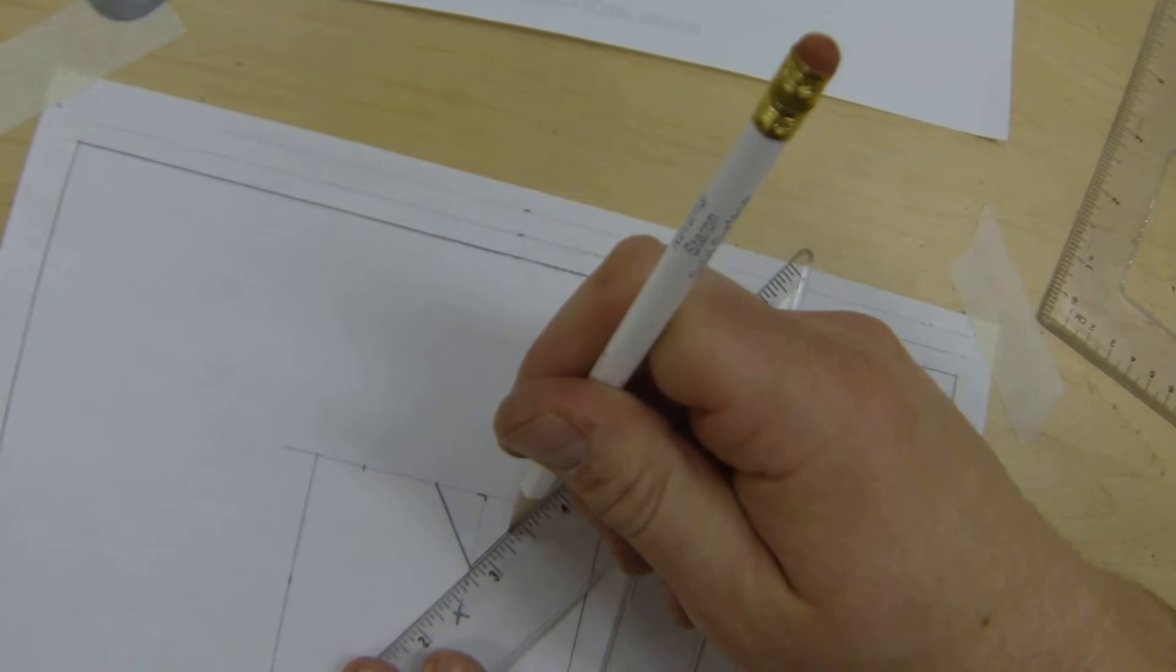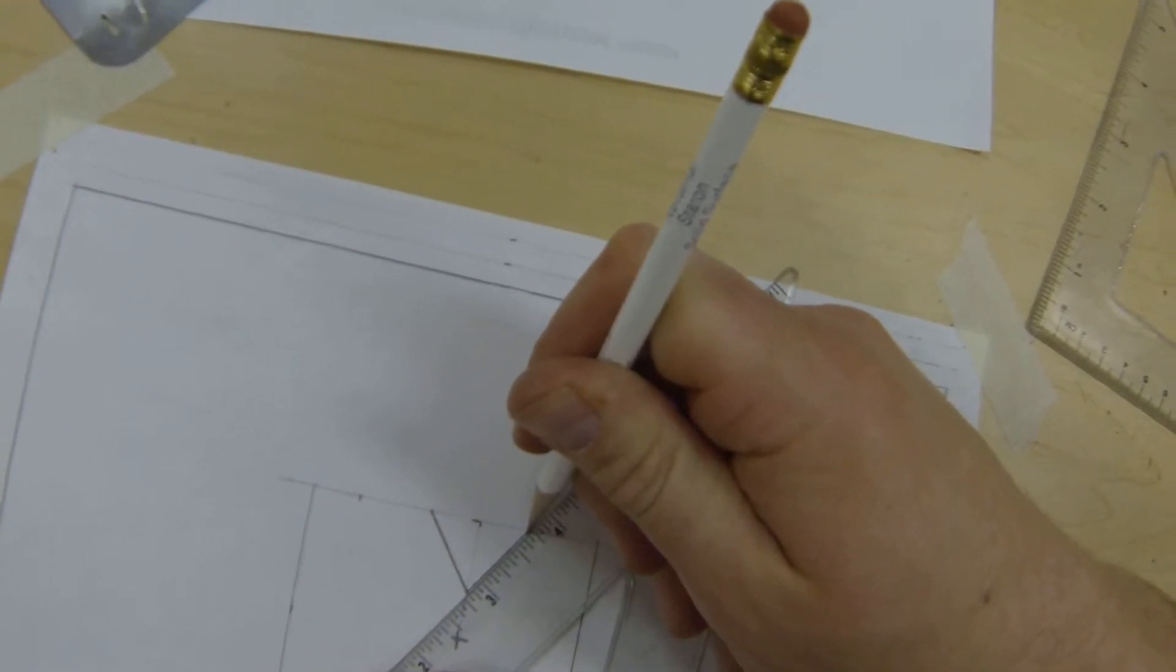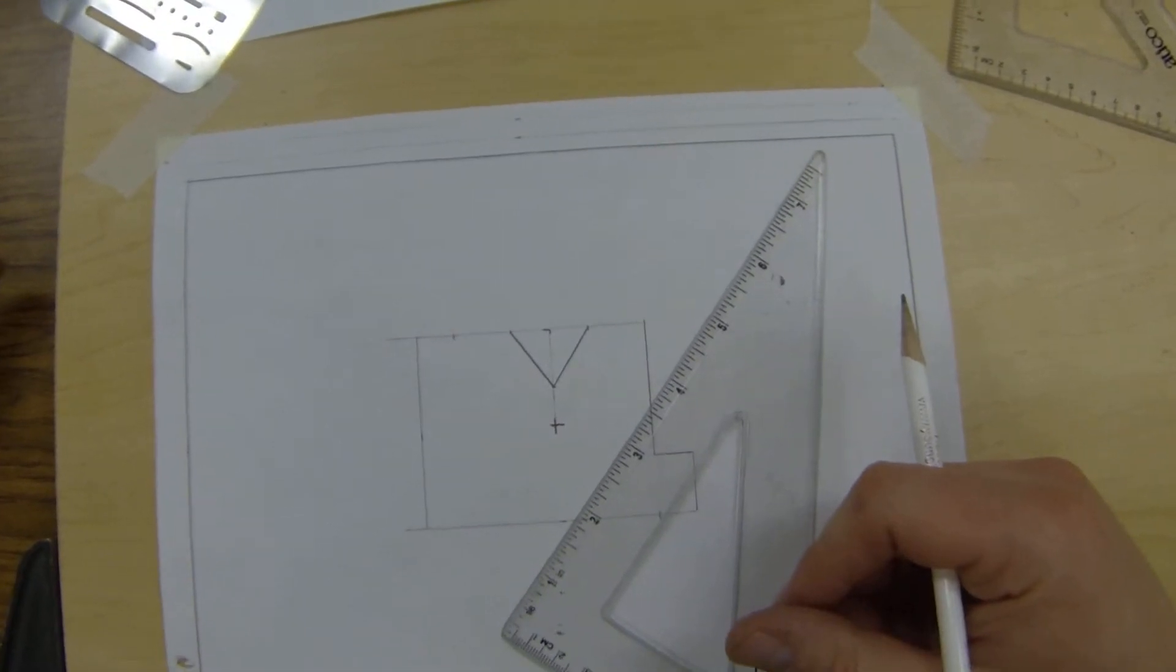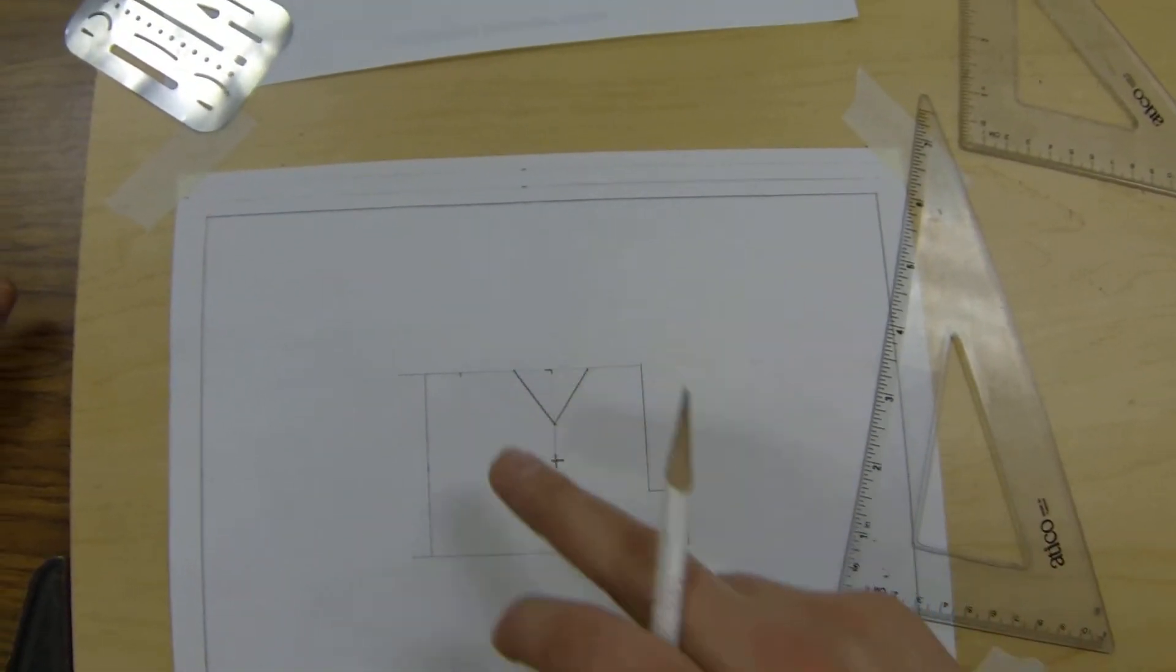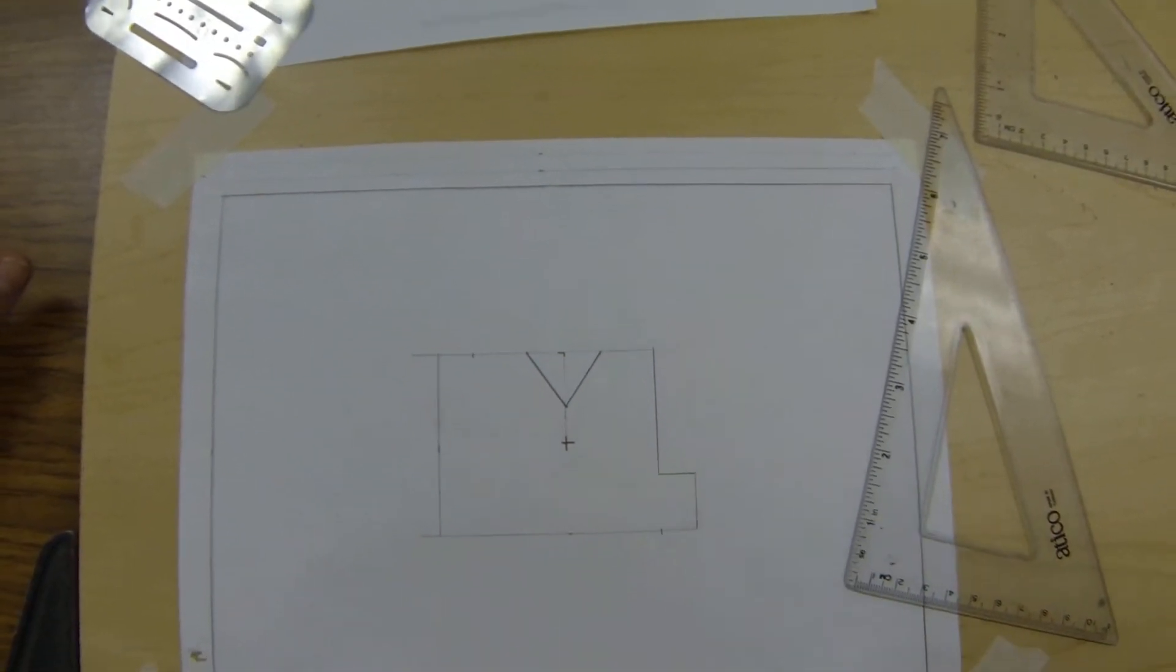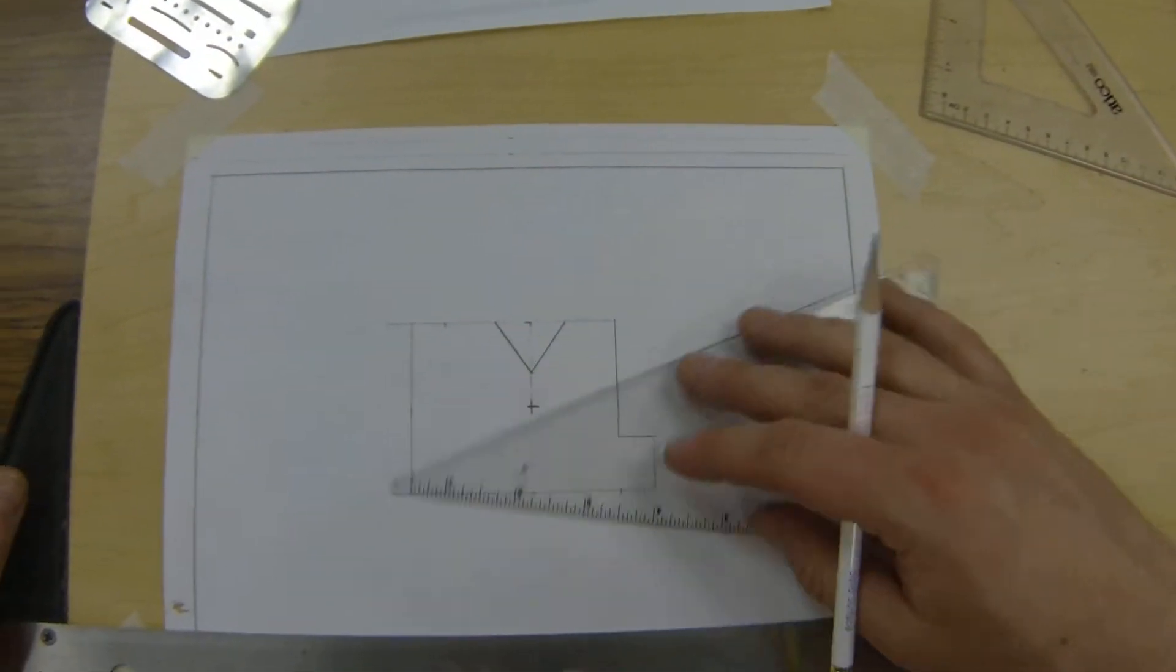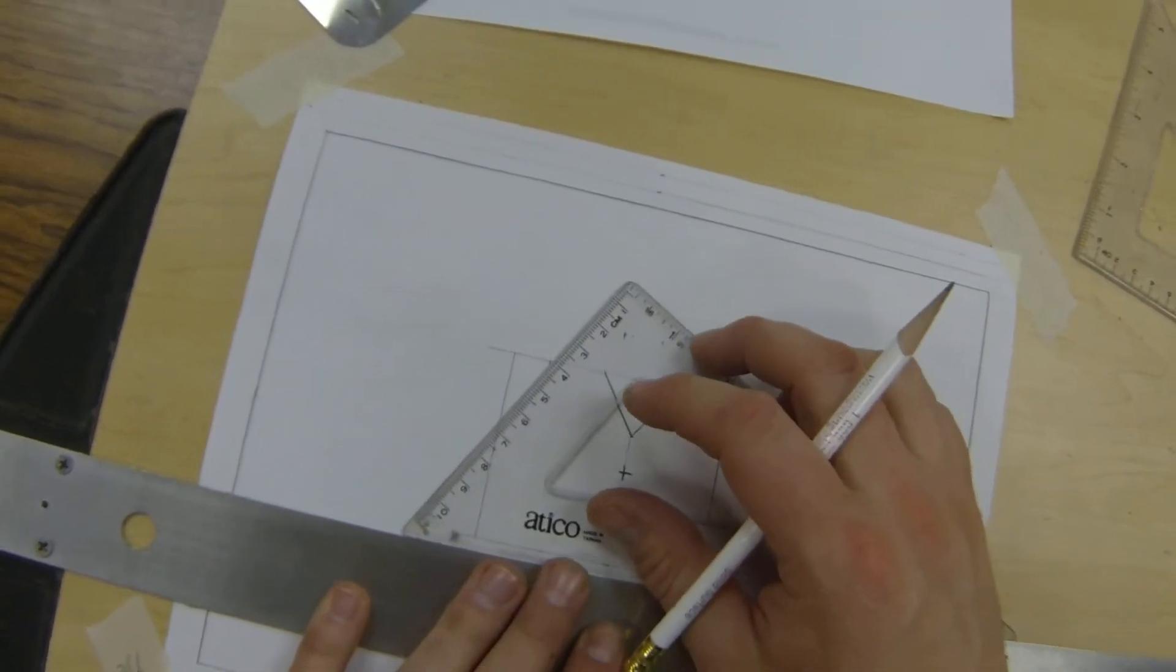You're going to find in plate number three or in drawing assignment number three you will have to do that. For this one here, this is one that's beyond plate number three as an example. So I've located this position as well.